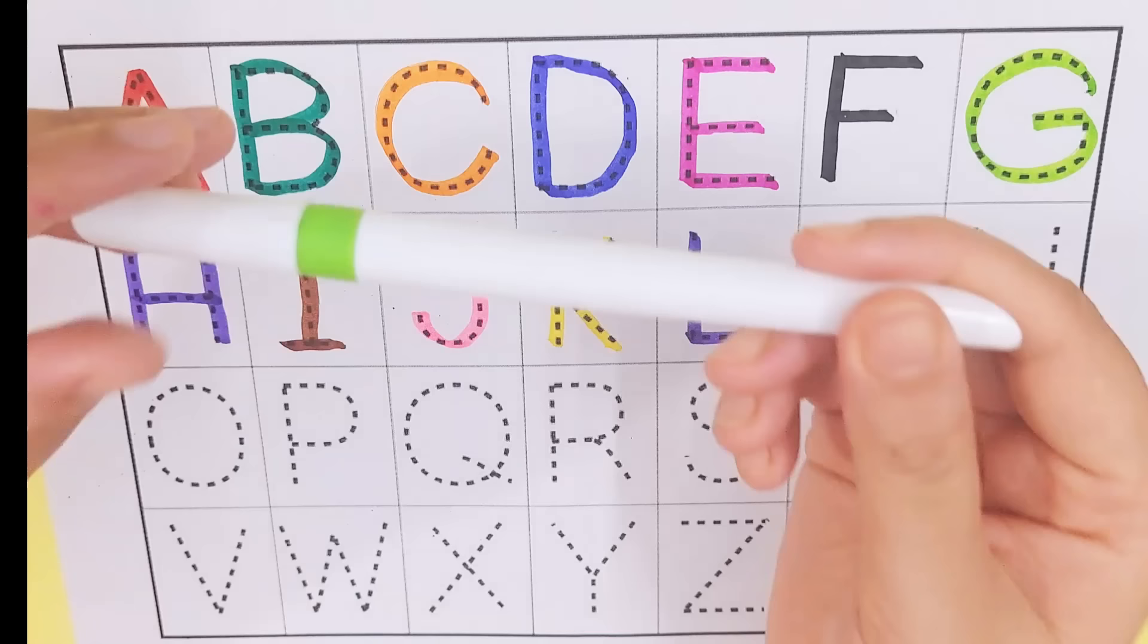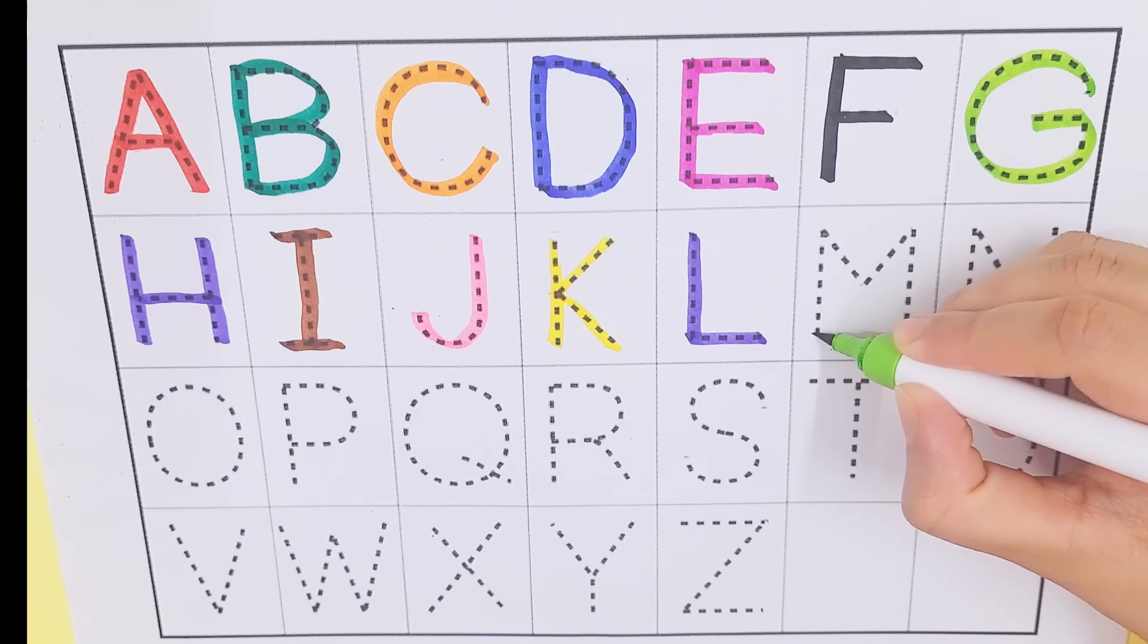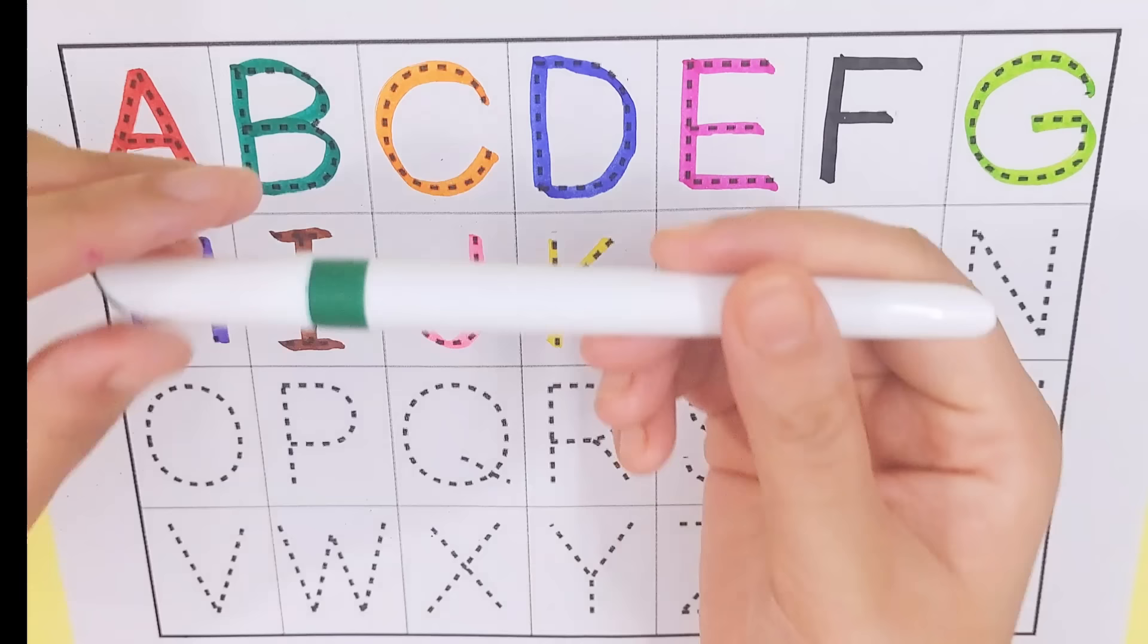Light green color, M, M for moon. Dark green color, N, N for night.